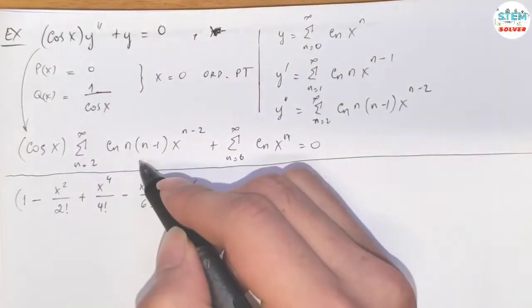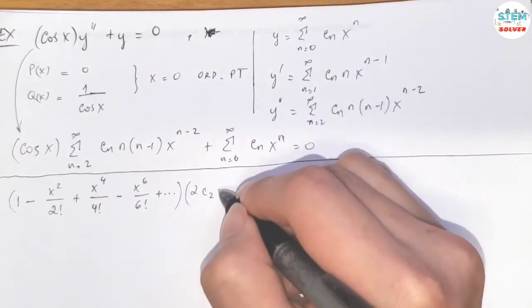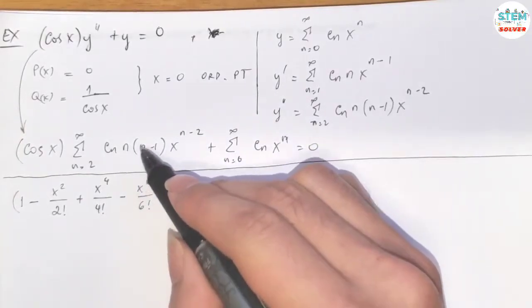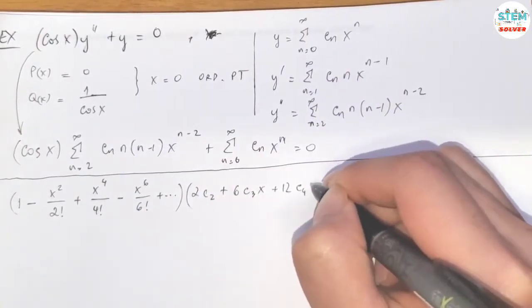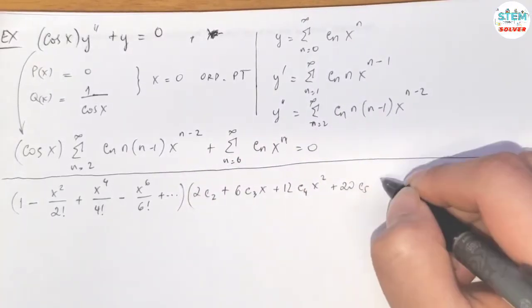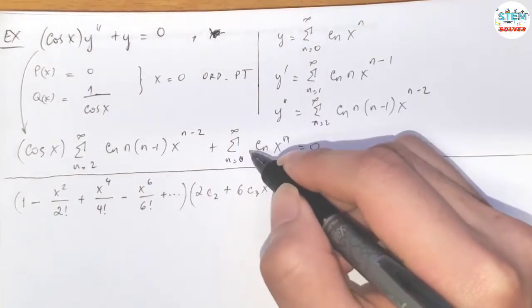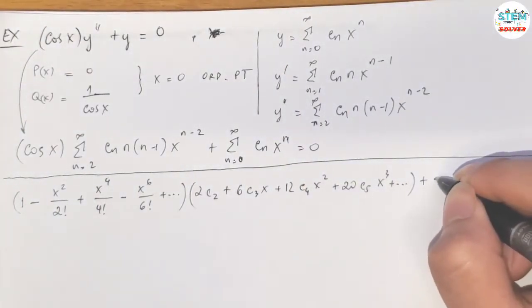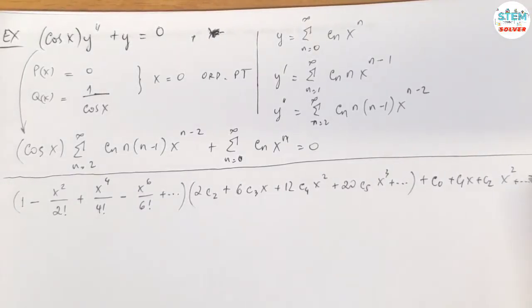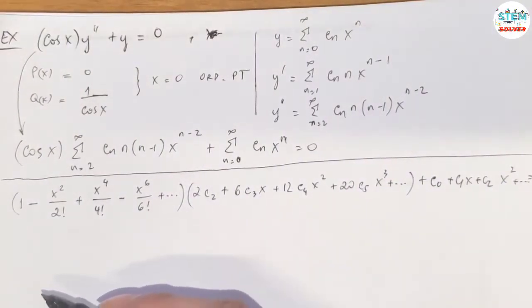For this one, you run out terms. So, plug in 2, I have 2c_2. Plug in 3, I have 6c_3 x. Plug in 4, I have 4 times 3, 12c_4 x squared. And for this one, run out terms. So we have c_0 plus c_1 x plus c_2 x squared plus dot dot equals zero.